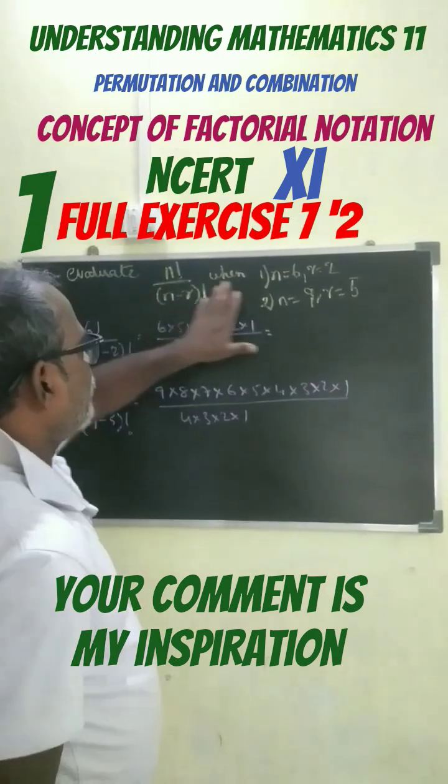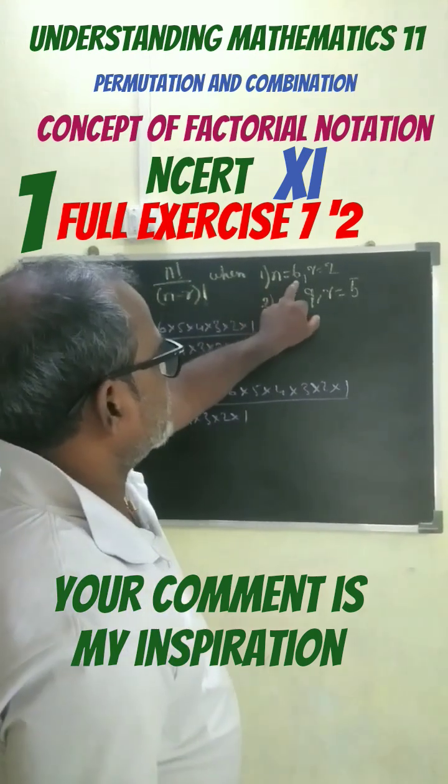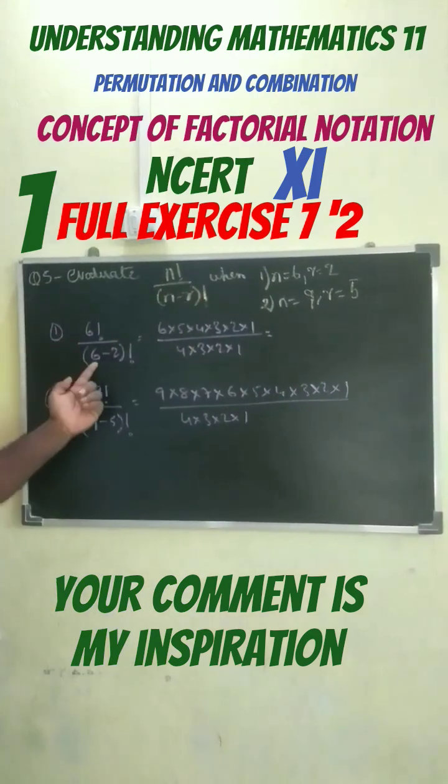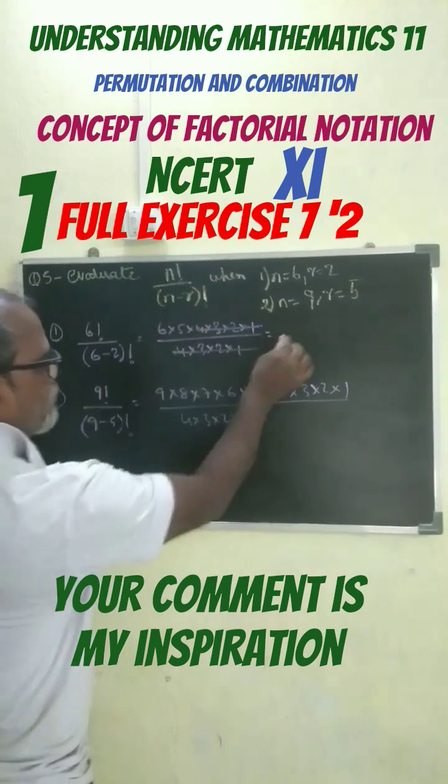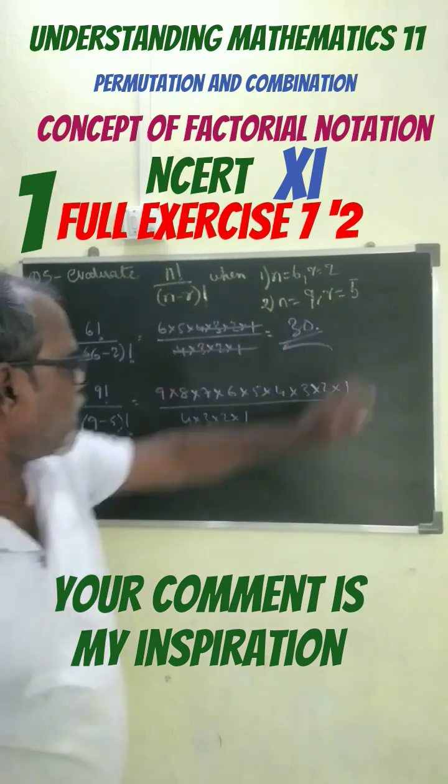This is the last question of the exercise. For this problem, 6 times 5 is 30, which is our answer. Similarly, for the next part, n equals 5 and r equals 5.